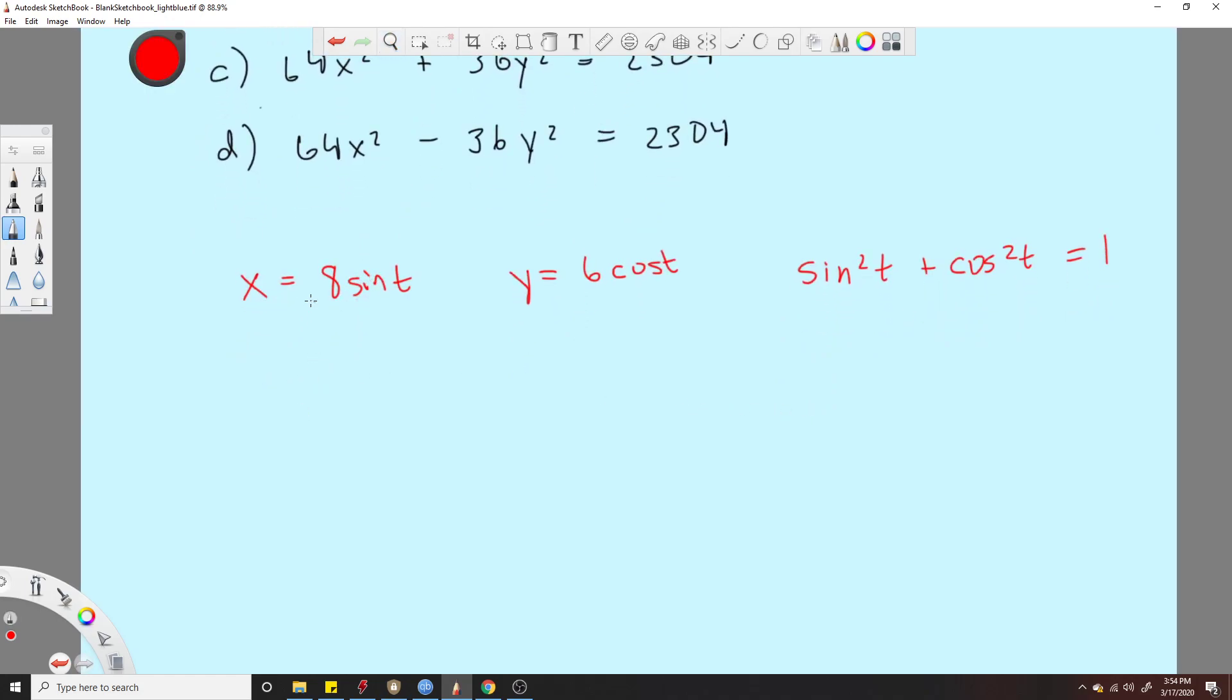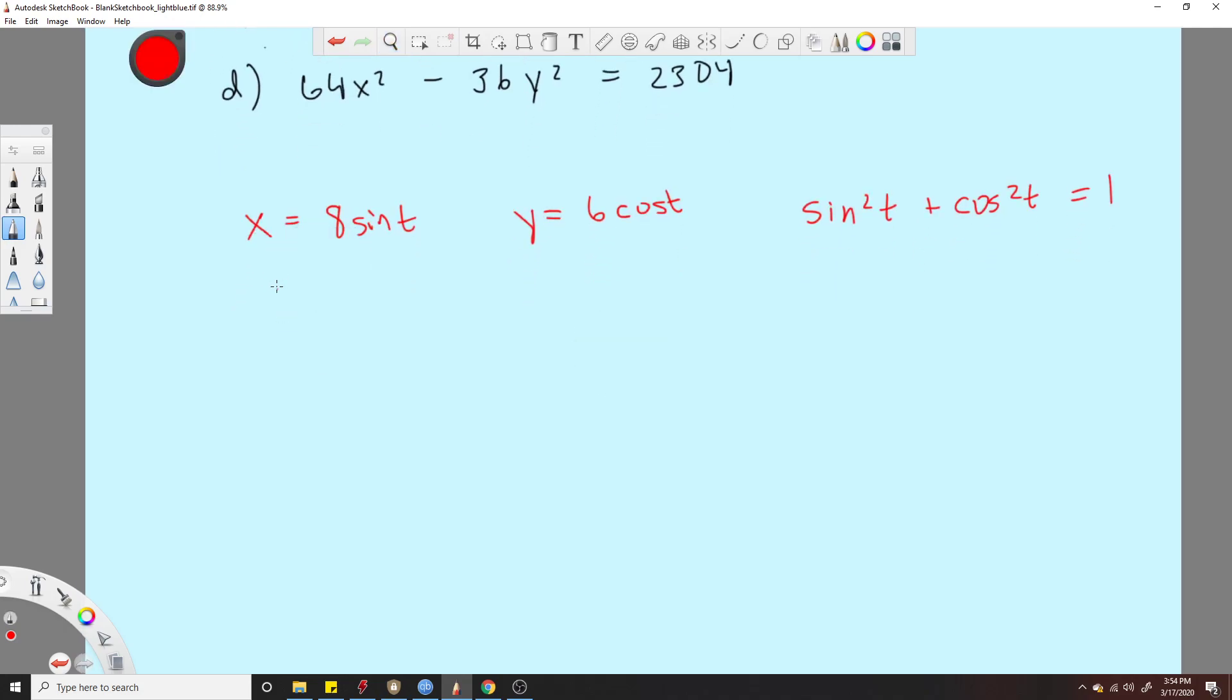Let's get sine squared t by itself. So we can square everything. And sine squared t is equal to x squared over 64.